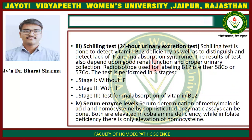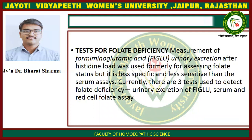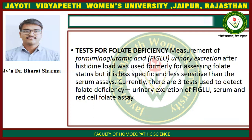The Schilling test is performed in three stages: first, without intrinsic factor; second, with intrinsic factor; and third, a test for malabsorption of vitamin B12. Fourth, serum enzyme level: serum determination of methylmalonic acid and homocysteine by sophisticated enzymatic assay can be done. Both are elevated in cobalamin deficiency, while in folate deficiency there is only elevation of homocysteine. Tests for Folate Deficiency — Measurement of formiminoglutamic acid (FIGLU): urinary excretion of FIGLU after a histidine load was used formerly for assaying folate status but is less specific and less sensitive than serum assay. Currently there are three tests used to detect folate deficiency: urine excretion of FIGLU, serum folate assay, and red cell folate assay.